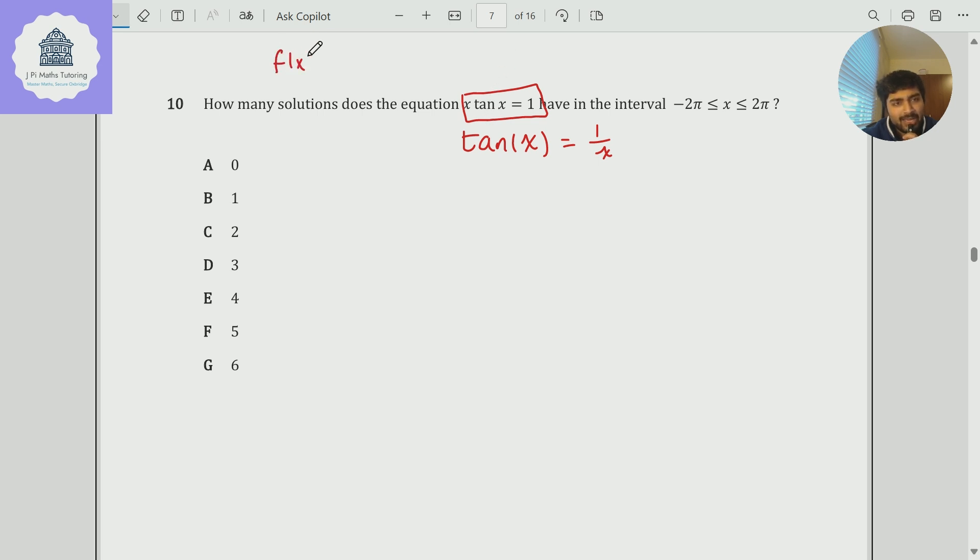If I call f of x, x tan x, then it's not too difficult to see that f of minus x is also x tan x as well. That means if, for example, there is some positive value of x such that x tan x is 1, so if alpha times tan alpha is 1 where alpha is some positive number,